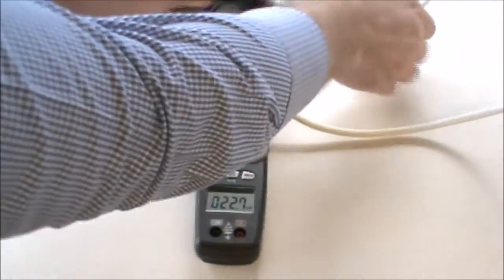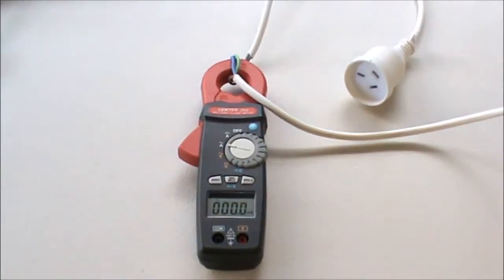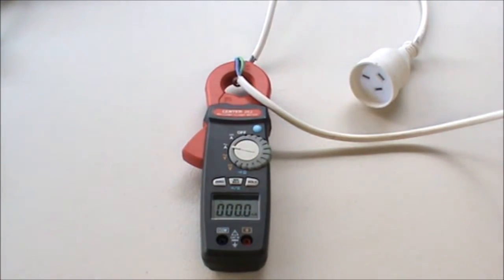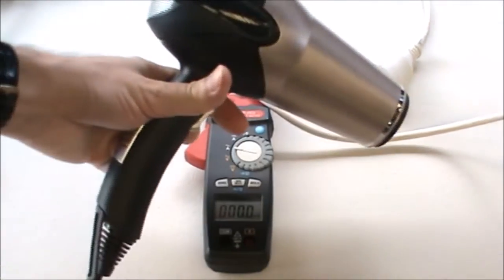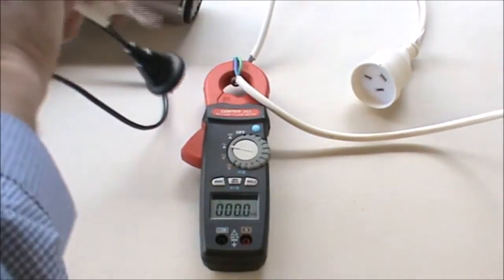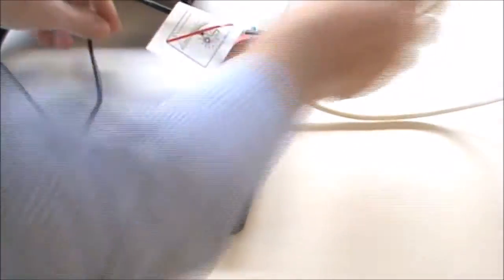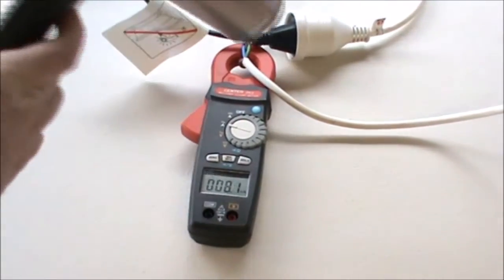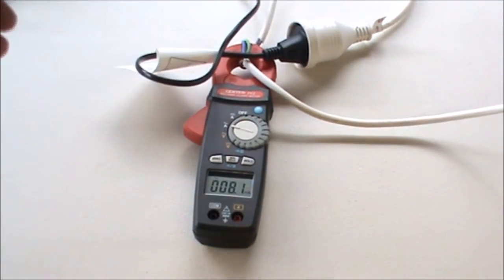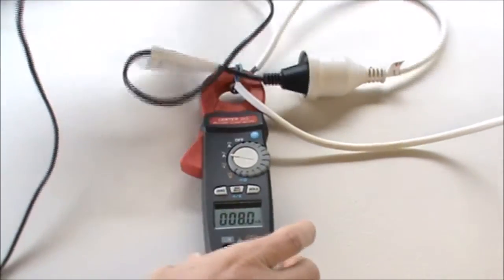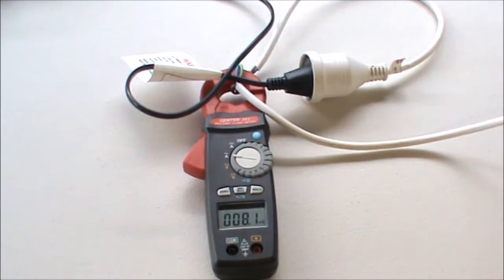Now, let's check for something with a bit more current draw behind it. I decided to try my wife's hair dryer. I figured that would draw a bit more current than other things I had floating around. Plugged in. Simply plugged in we're drawing 8 milliamps.